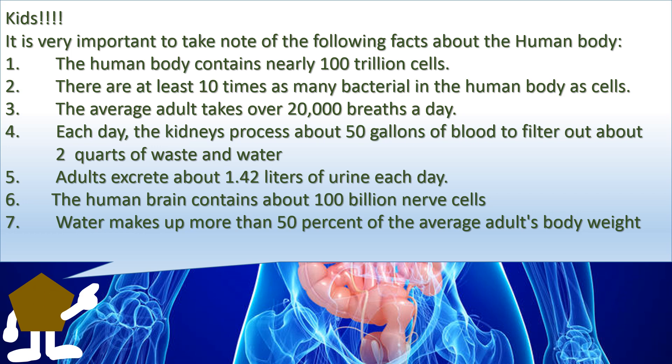It is very important to take note of the following facts about the human body: 1. The human body contains nearly one hundred trillion cells. 2. There are at least ten times as many bacteria in the human body as cells. 3. The average adult takes over 20,000 breaths a day. 4. Each day the kidneys process about fifty gallons of blood to filter out about two quarts of waste and water. 5. Adults produce about 1.42 litres of urine each day. 6. The human brain contains about 100 billion nerve cells. 7. Water makes up more than 50% of the average adult's body weight.